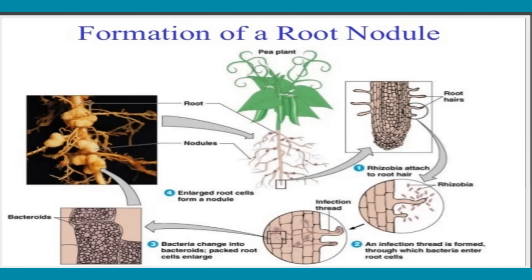Upon formation of the bacteroids, the vascular tissue of the root sets up continuity with newly differentiated vascular tissues of the nodule. The bacteroids contain essential nitrogen-fixing enzymes — most importantly nitrogenase — and also NIF genes (nitrogen-fixing genes). ATP, adenosine triphosphate, is required for nitrogen fixation as the energy source. The bacteroids also contain a reddish pigment called leghemoglobin.